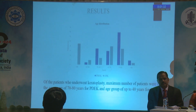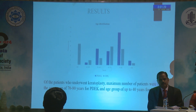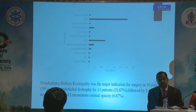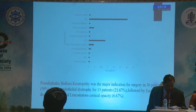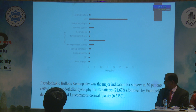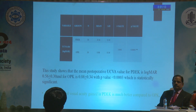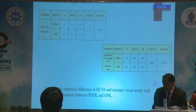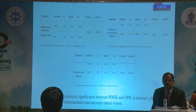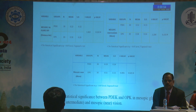Coming to the results, among patients who underwent keratoplasty, the maximum age group was 70 to 80 years for OPK and up to 40 years for PDEC. The most common indication for surgery in 30 patients was pseudophakic bullous keratopathy, followed by Fuchs', endothelial decompensation and leukomatous corneal opacity. The uncorrected visual acuity gained in PDEC was much better compared to OPK, which was statistically highly significant. Best corrected visual acuity at distance and mesopic glare on at distance did not show much significance, and there was no statistical significance in mesopic glare off at 4 meters, intermediate, and mesopic near vision.